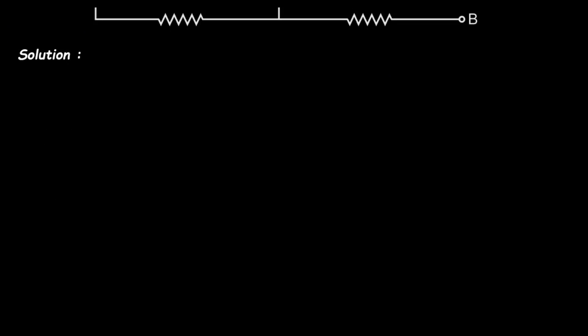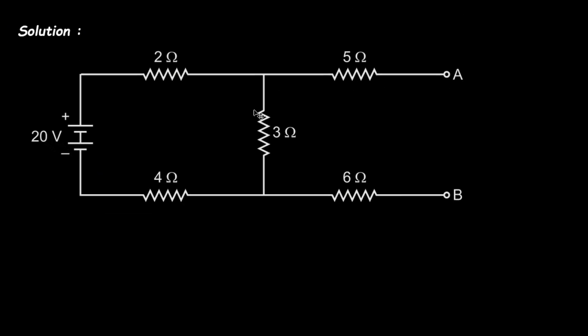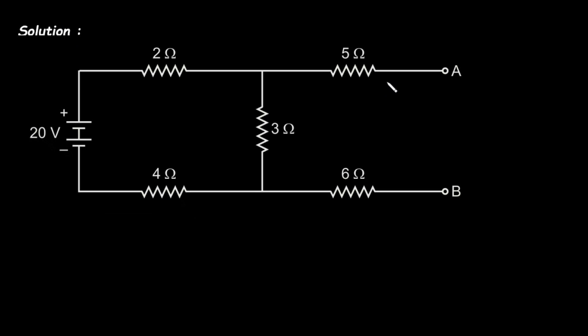Solution. First of all we will take this circuit. Now we will find RTH. Step number one is to find RTH. Now to find RTH we have to remove RL, to find RTH remove RL and turn off all independent sources.